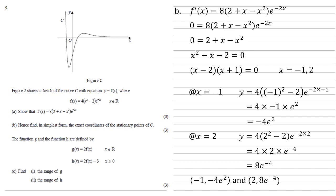So our coordinates therefore are minus 1 minus 4e squared and 2, 8e to the minus 4.